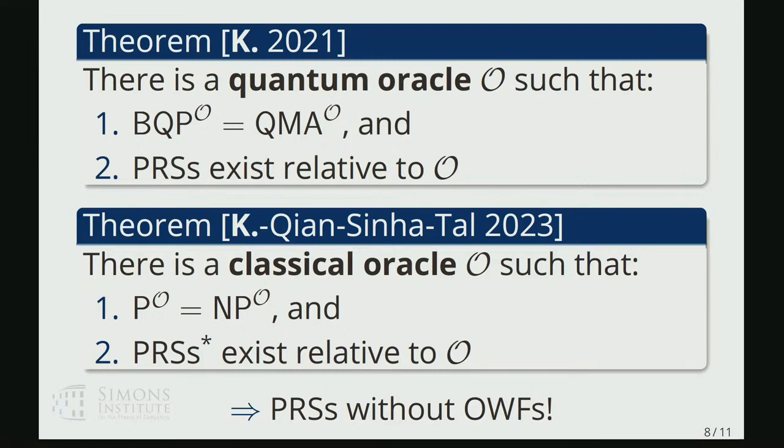by the reductions, by the security reductions that have been shown in other work, you get a wide range of quantum cryptography, even though since P equals NP, you don't get classical cryptography.